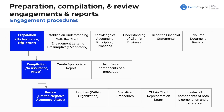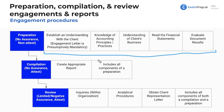Now let's look at procedures for preparation, compilation, and review, where each level builds upon the previous. For preparation — a non-attest engagement giving no assurance — you establish an understanding with the client, have knowledge of accounting principles and practices, understand the client's business, read the financial statements, and evaluate and document the results. These items apply to all three engagement types.